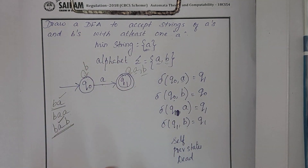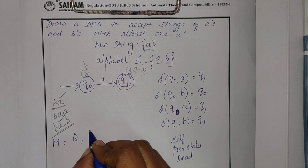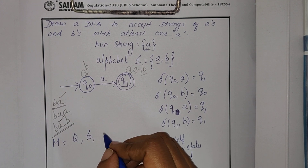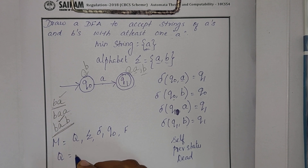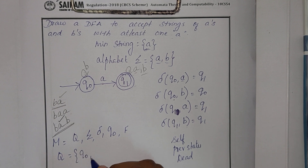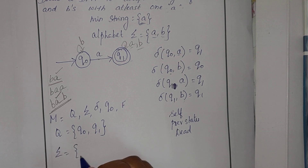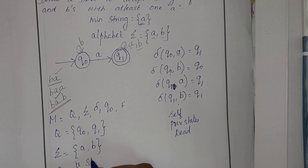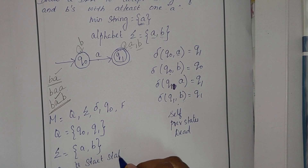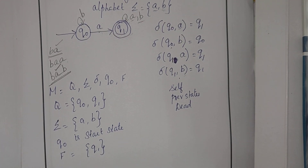The next step is to write my machine definition. The machine is a five-tuple: Q comma sigma comma delta comma Q0 comma F. Capital Q is the set of all states: Q0 comma Q1. Sigma is A comma B. Q0 is the start state. F, the final state, is Q1.